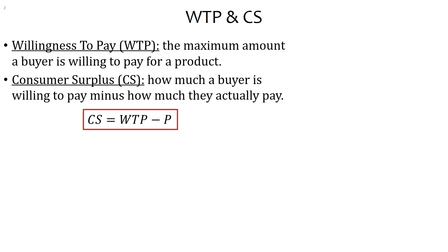Let's look at an example. Say you want to buy a used cell phone with certain features and you would be willing to pay $400 for it — so your willingness to pay is $400. If you find it being sold at $600, you won't buy it because it's not worth that much to you. If you find it at $400 or less, then you're going to buy it.